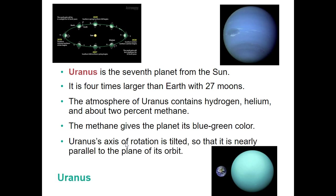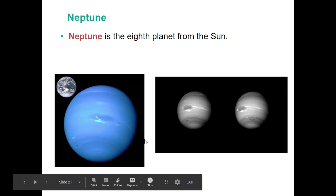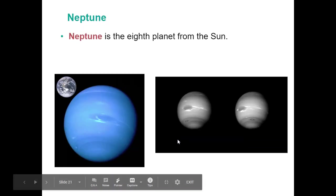Uranus is the seventh planet from the sun, four times larger than Earth, with 27 moons. It is composed of hydrogen, helium, and some methane — the methane gives it a blue tint. Its axis is actually tilted nearly parallel to the plane of its orbit, so instead of spinning at an angle like Earth, it essentially rolls over the top of itself. Uranus also has a set of rings, though much smaller compared to Saturn's.